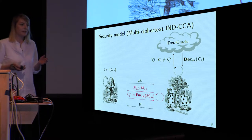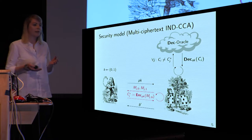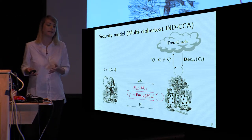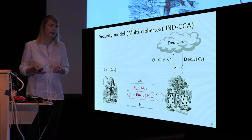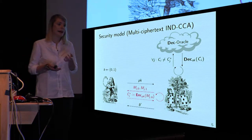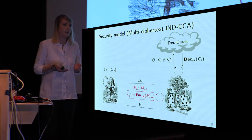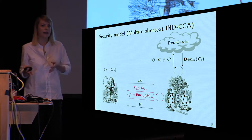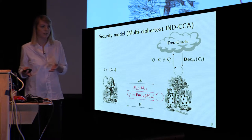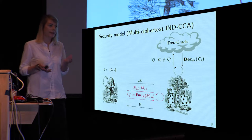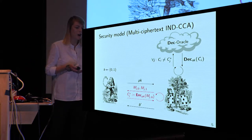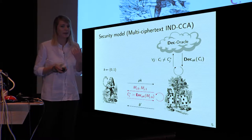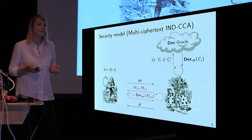So why do we usually talk about IND-CCA security and not about multi-ciphertext IND-CCA security? Well, if we just care about asymptotic security, we're fine because IND-CCA security implies multi-ciphertext IND-CCA security. But why do we directly want to work with this notion in this talk? It's because we care about the quality of the reduction.